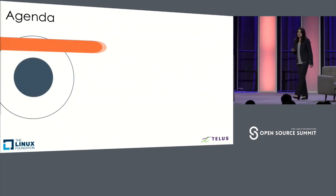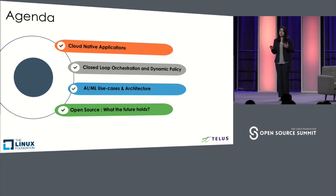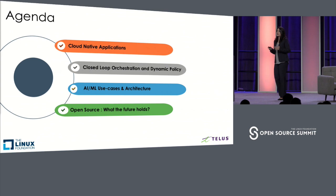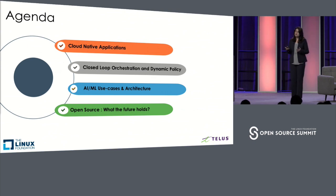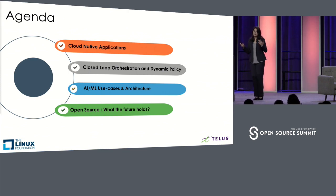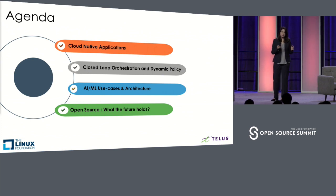Quickly moving on to the agenda. First, I'll walk you through what it really means to a telecom service provider by what we say cloud-native applications. Then I will introduce you to the concept of closed-loop — a static closed-loop — and then we'll see how to write dynamic policies and dynamic closed-loop, which is basically assisted with AI and machine learning. Next, I'll walk you through some AI and machine learning practical use cases and show you an architecture driving orchestration, analytics, and AI and machine learning all together. At the end, we will see what open-source projects in the orchestration space and the AI and machine learning space will help the community move forward.